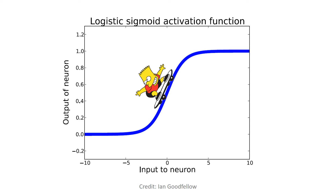Hello, today we are going to discuss the interpretability of the logistic regression algorithm. As you might remember, the logistic regression equation is a combination of the sigmoid function and the linear regression equation. We will talk about the relation between feature importance and feature coefficients in the equation.